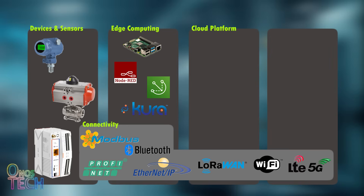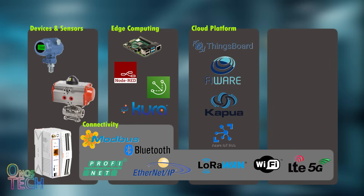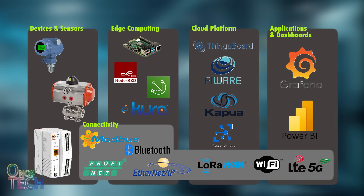Open-source platforms such as ThingsBoard, Thingworx, or Eclipse Kapua store, virtualize, and analyze the data. Commercial platforms to consider are AWS IoT Core, Azure IoT Hub, and Siemens MindSphere. And finally, the Applications and Dashboards layer, where operators use web dashboards and mobile apps to visualize performance, receive maintenance alerts, work orders, and MES integrations to close the loop. Typical tools are Grafana, Power BI, or built-in dashboards in cloud platforms.